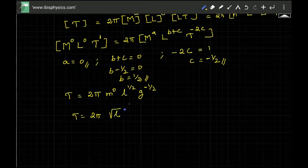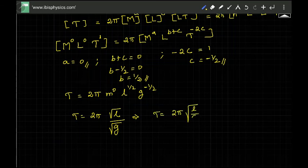g power minus 1/2 could be written as g power plus 1/2 in the denominator, that is root. This is equal to time period equal to 2π root over L by g.